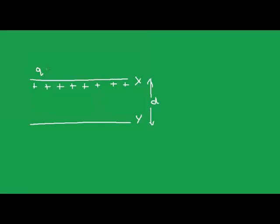The charge is given by Q equal to sigma cross A, where sigma is the surface charge density and A is the area of the metal plate. When plate Y is brought near plate X, an equal amount of negative charges are induced on the near side of plate Y, and an equal amount of positive charges appear on the far side. If we ground it, plate Y becomes fully negatively charged. Due to these two charges, an electric field E is confined between the plates.